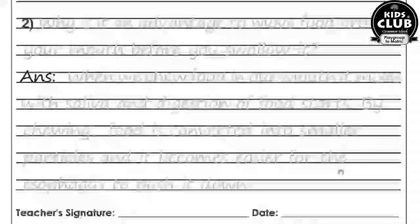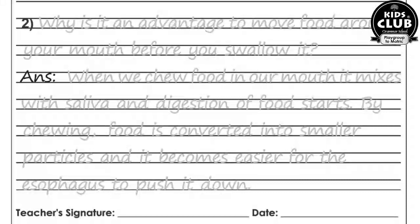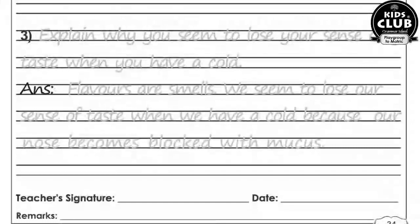Sense Organs — Tongue and Nose. Question number one: Where are your taste buds? The taste buds are present in between the ridges on your tongue. Why is it an advantage to move food around your mouth before you swallow it? When we chew food in our mouth, it mixes with saliva and digestion of food starts. By chewing, food is converted into smaller particles and it becomes easier for the esophagus to push it down towards the stomach.